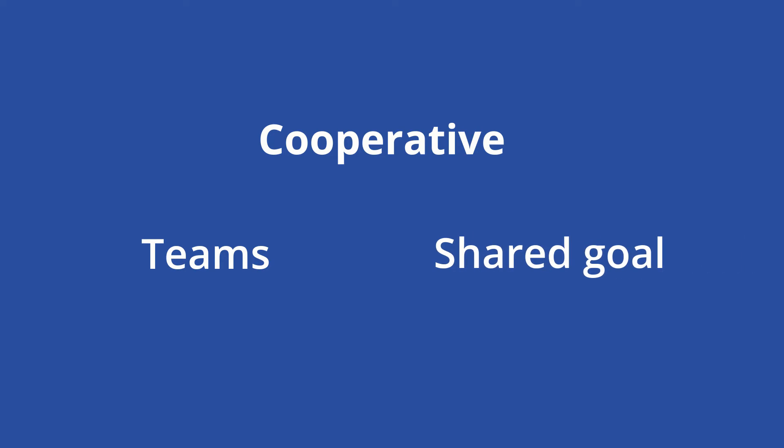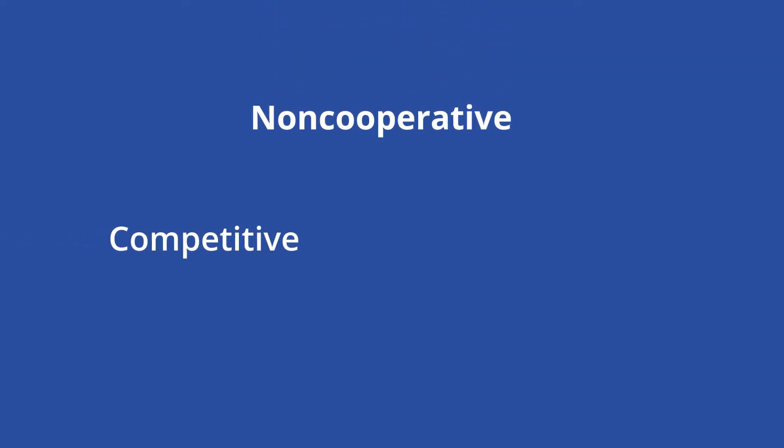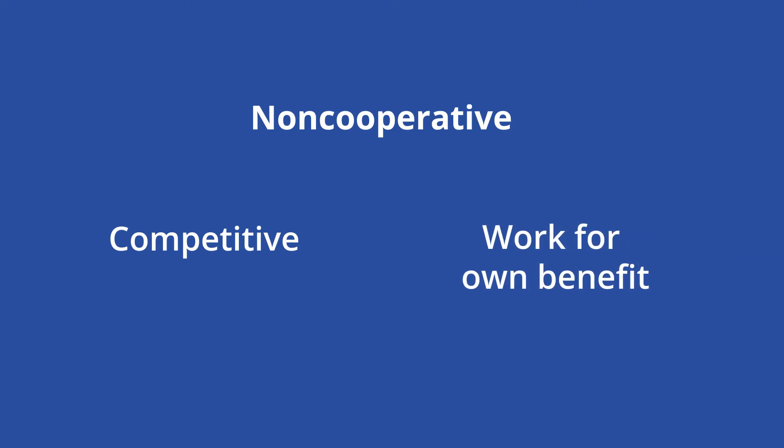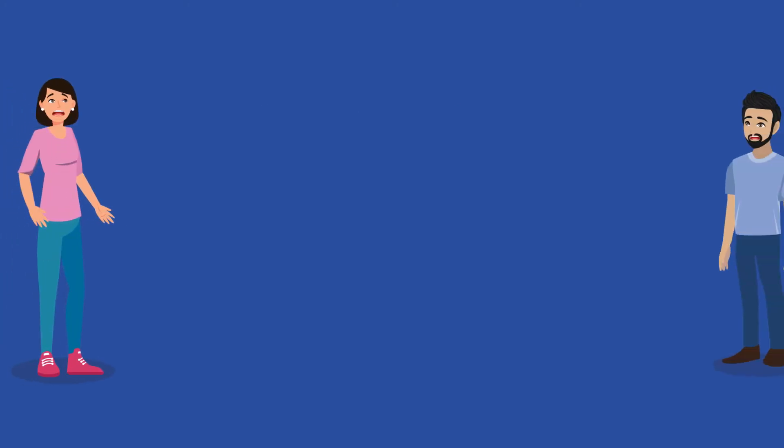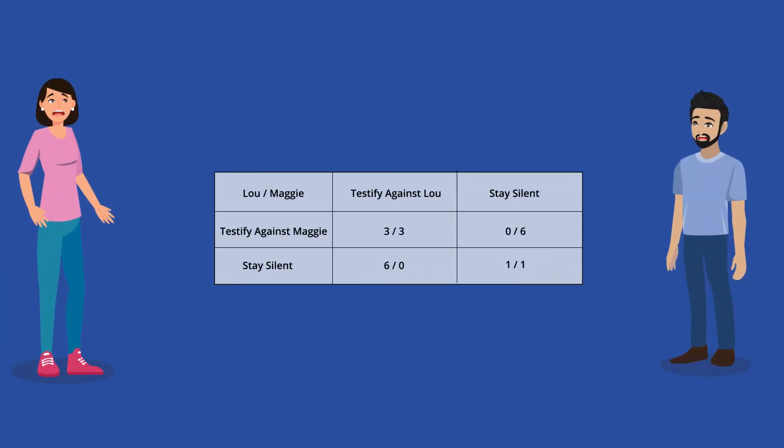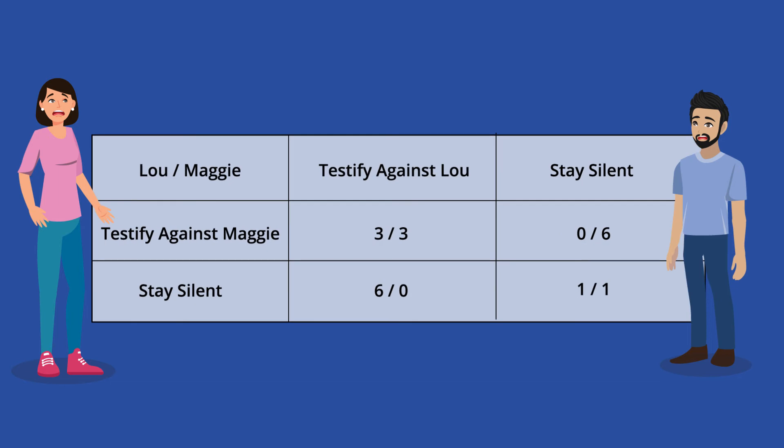Two big categories of game theory are cooperative and non-cooperative. In cooperative game theory, it's in the player's best interest to form teams, and the bonds between teammates can be trusted. Together, they work towards a shared goal. Non-cooperative games are the exact opposite — they're competitive, and everyone is working to their own benefit. To fully understand the difference, let's examine the competitive prisoner's dilemma.